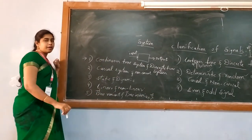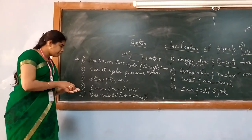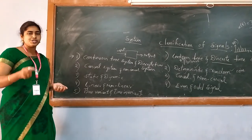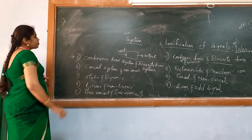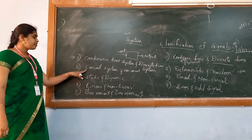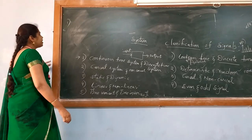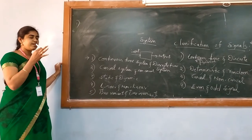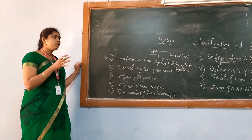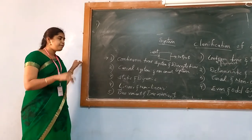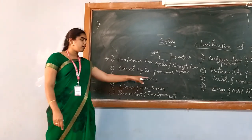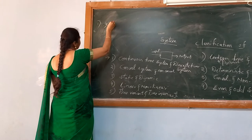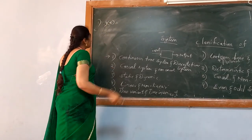Fifth one is time variant and time invariant. Let me explain these types because they depend upon some logic. Whenever you want to describe a system as a causal system, the condition says that it should depend upon only the present and past values. If it depends on any future value, then it will be called a non-causal system. Let me explain causal and non-causal system with an equation — suppose I am taking a continuous time type of equation y of t.